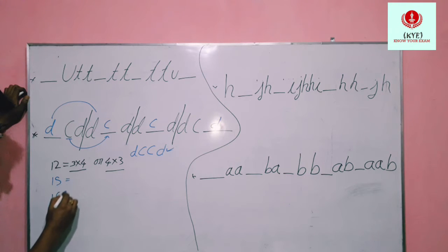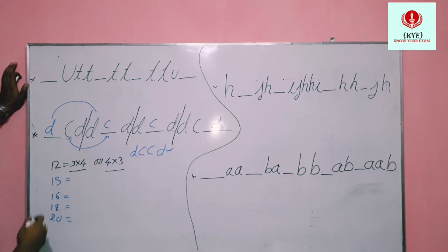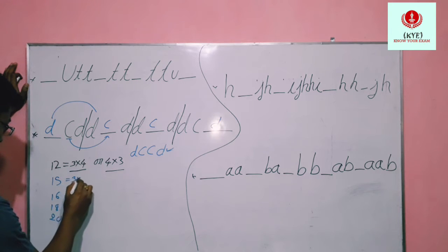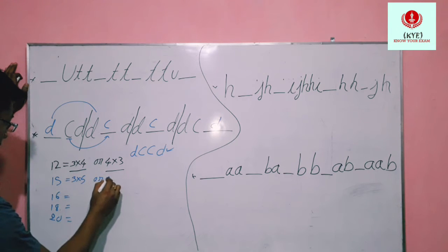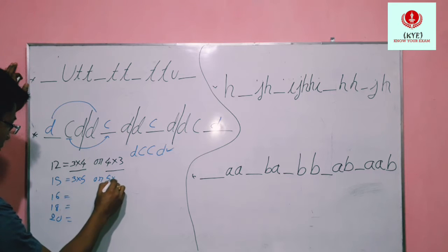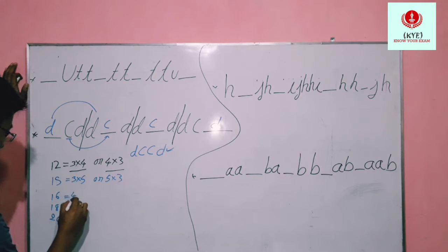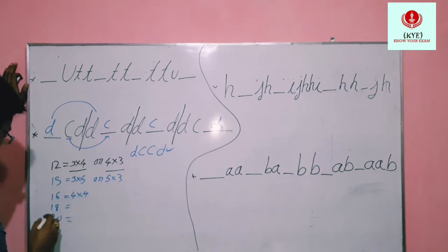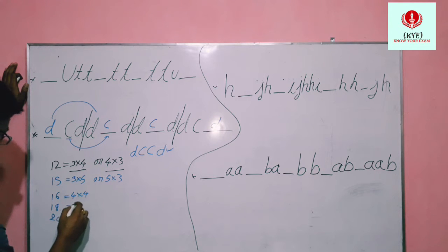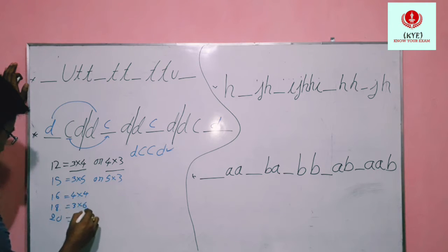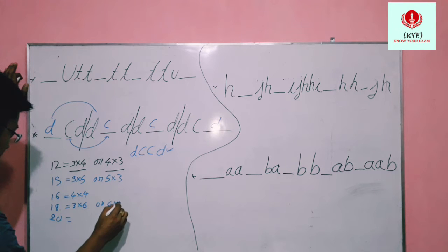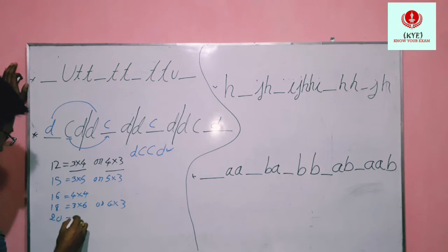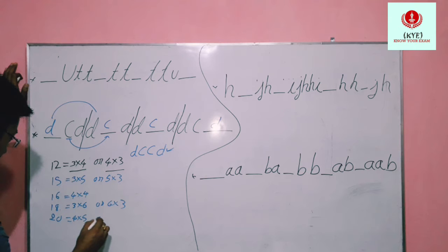This is the second question for the exam. 15 is 3 into 5, or 5 into 3. 16 is 4 into 4. 18 is 3 into 6, or 6 into 3. 20 is 4 into 5 or 5 into 4.